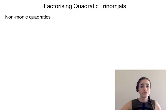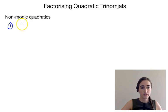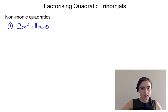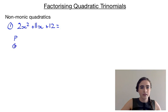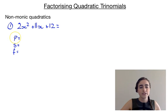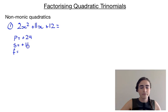Now let's look at some examples of non-monic quadratics — that's when the coefficient of the squared term is not 1. For example, we might have 2x squared plus 11x plus 12. In a monic quadratic, the squared term has a coefficient of 1; in non-monics, there's some other number there. We're still going to use PSF, but it's a little different. Instead of the product just being the constant term, it's going to be that constant term multiplied by the coefficient of the squared term — so in this one, positive 24. The sum is still the middle term coefficient, which is positive 11. So we need 2 numbers that multiply to give 24 and add to give 11.